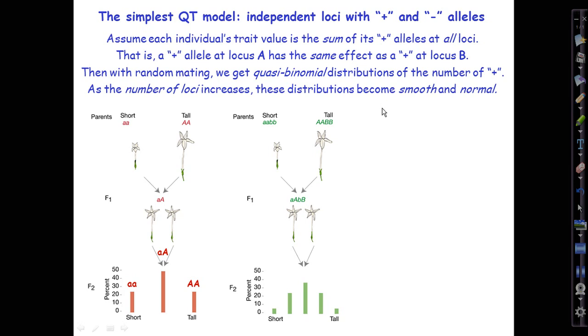Okay, so now let's add a second locus, call it B for convenience, and assume that the short flowered strain or inbred line family is homozygous for little a and little b, both of which are short-making. And conversely, the tall flowered line is homozygous for the capital letter allele at both the a and b loci. So it has four tall-making alleles. The F1 hybrids will then be double heterozygotes. They'll have two short-making alleles, little a and little b, two tall-making alleles, big A and big B. They'll be of intermediate height, just as they really were.